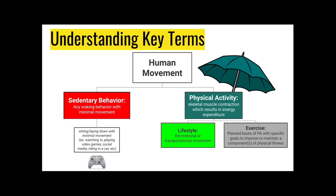Two main categories under our umbrella of physical activity are lifestyle and exercise. Walking to school would be an example of a lifestyle physical activity — it's something we incorporate into our day-to-day life that also involves movement. Other examples of lifestyle physical activities include those we do for leisure or recreation, whether that be playing games with friends or going for a bike ride with family members. The term exercise refers to planned bouts of physical activity which have the specific goal of improving or maintaining a component of our physical fitness.